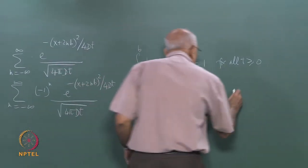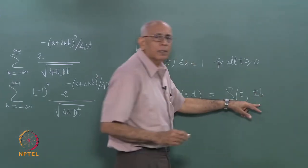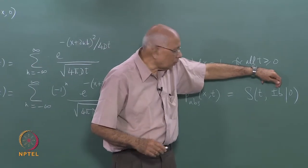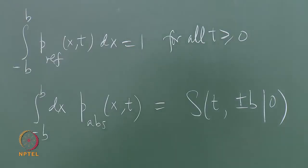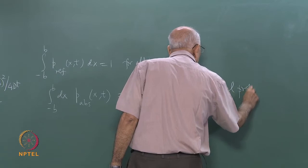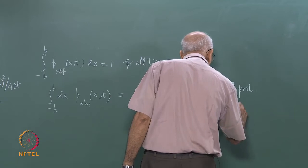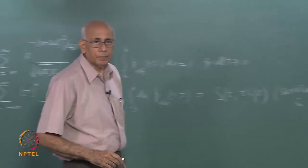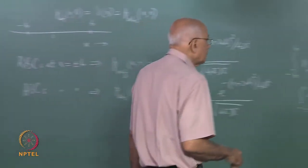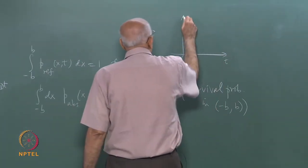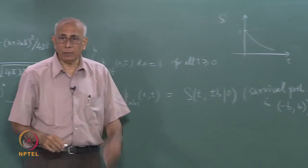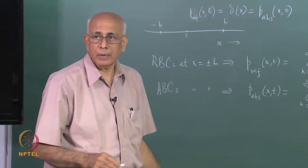Let me call this the survival probability S(t) — the probability of staying in the open region (−b, b), given barriers at ±b and the particle started at the origin. It obviously depends on where it started; we took a symmetric initial condition. If I plot S as a function of t, at t=0 it is 1, and then it dies down. It turns out it dies down exponentially fast and we must see that explicitly.